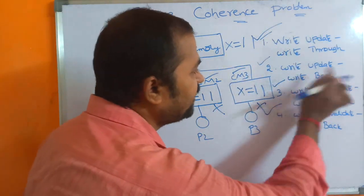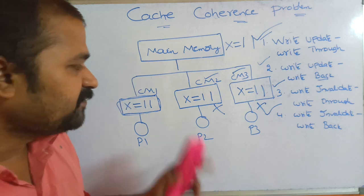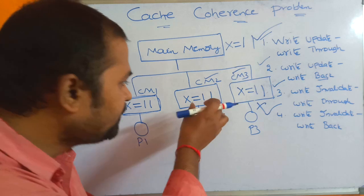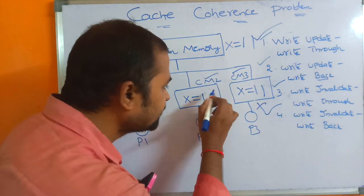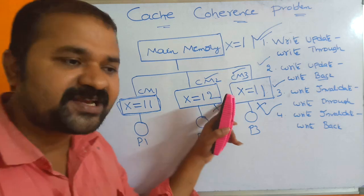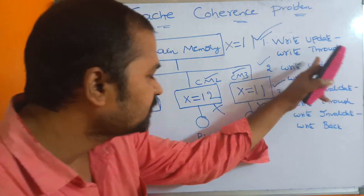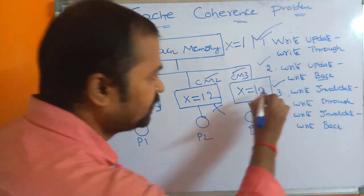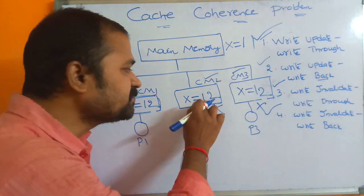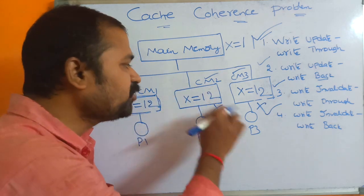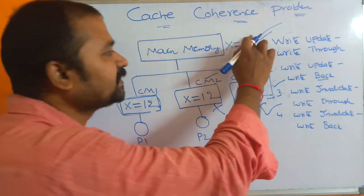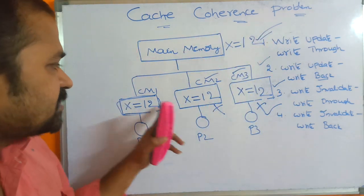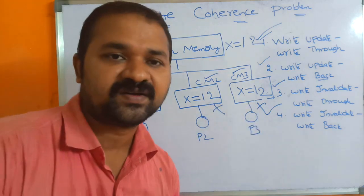The second approach is write update + write back. If we perform any updation in a cache, we update other caches also. Assume that in cache memory CM2, X is updated to 12. Write update means other caches are also updated to 12. Write back means the main memory is updated to 12 only when replacement occurs. After replacement, all caches and main memory have X = 12, so there is no problem.